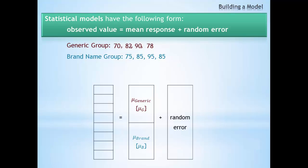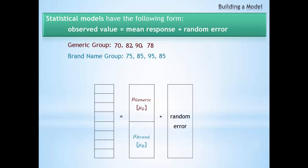Statistical models typically have the following form: there is an observed value that is equal to some mean response or some expected value plus random error. The observed value is simply the observed response data.